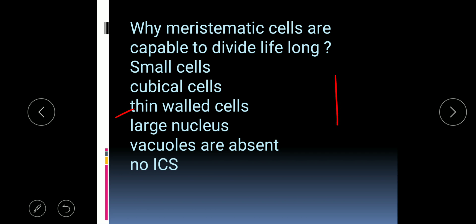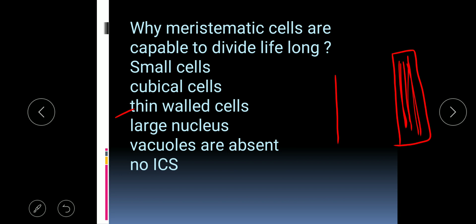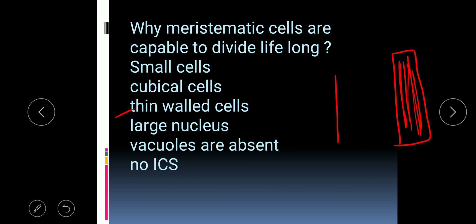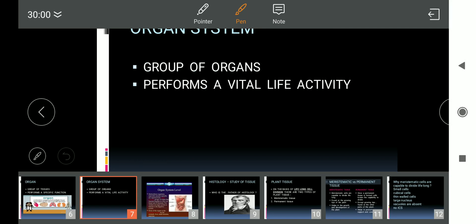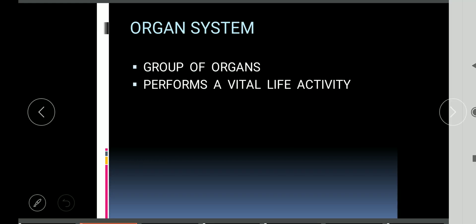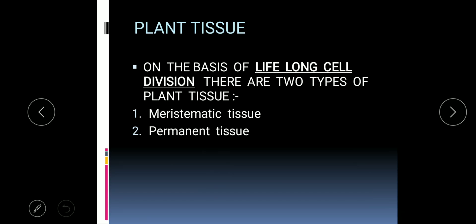The cell wall of meristematic cells is thin. Again, using the same example — a thin matchstick is easier to divide than a thick log of a tree. So when the cell wall is thin, the cell's capability to divide lifelong becomes easy.